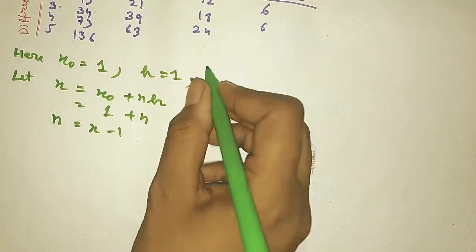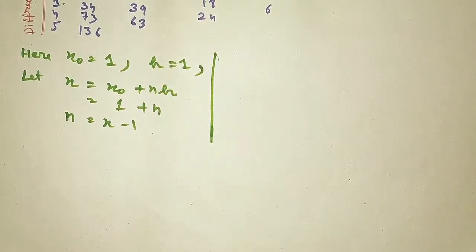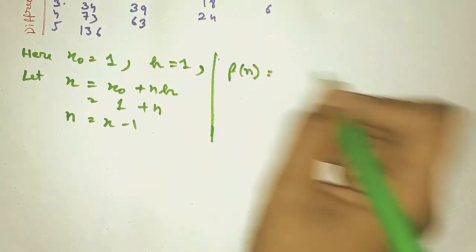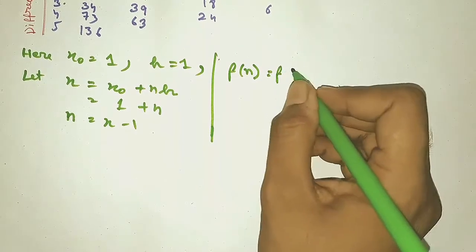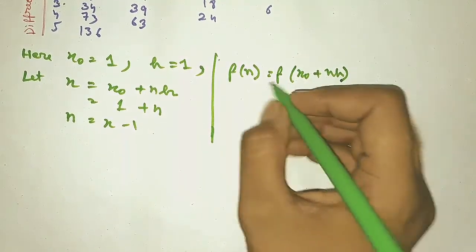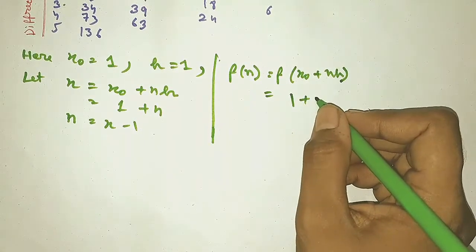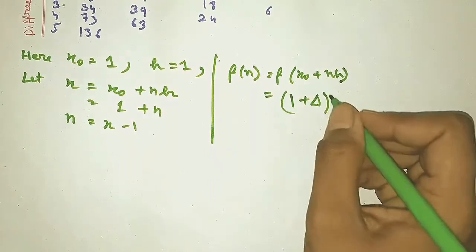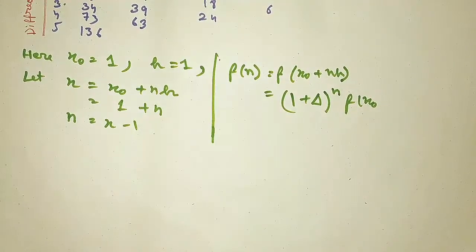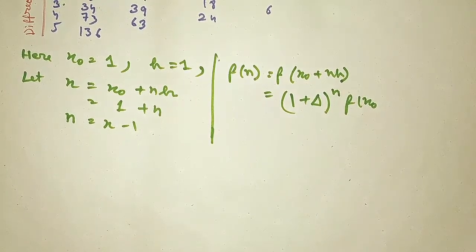Now we are going to find the polynomial f(X). We write f(X) and substitute the expression for X, where X = X₀ + nH. The formula gives f(X) = (1 + Δ)^n · f(X₀), as described in my other videos.